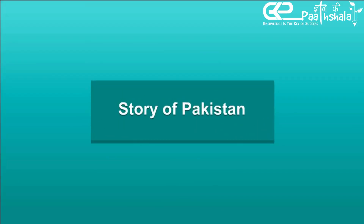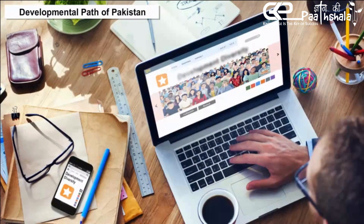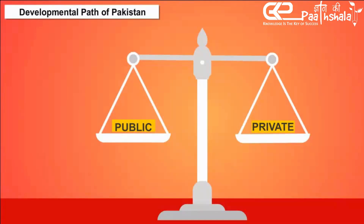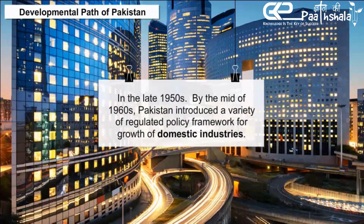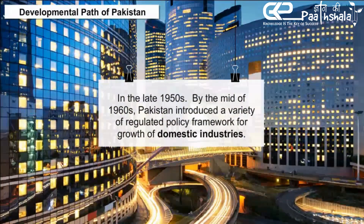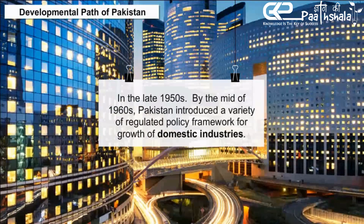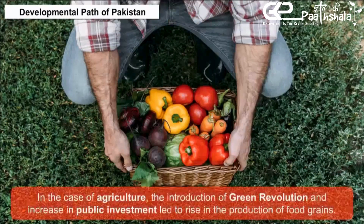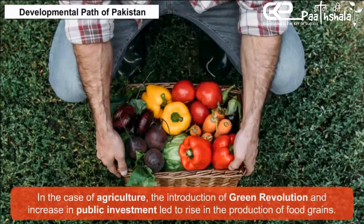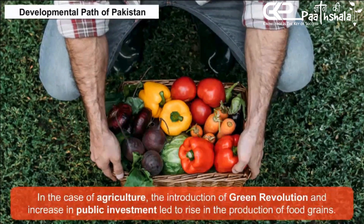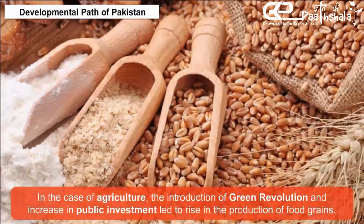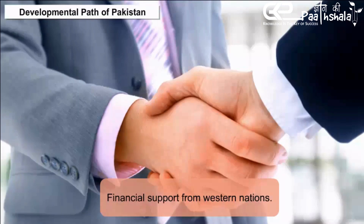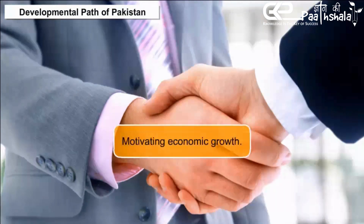Story of Pakistan — Developmental Paths of Pakistan. Pakistan followed the mixed economic system with coexistence of public and private sectors. In the late 1950s to mid-1960s, Pakistan introduced a variety of regulated policy frameworks for the growth of domestic industries. In the case of agriculture, the introduction of the Green Revolution and increase in public investment led to a rise in the production of food grains. During this period, Pakistan also received financial support from Western nations, which helped motivate economic growth.